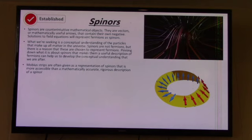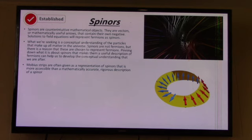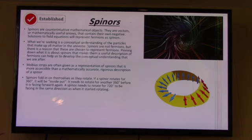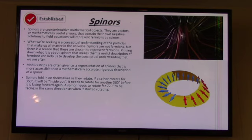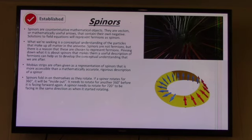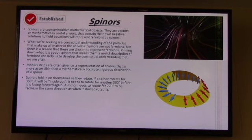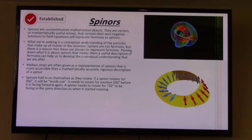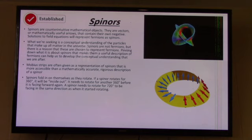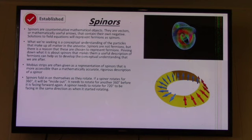This is a little more accessible than a mathematically rigorous description of a spinor. One way to think about it is that spinors kind of fold on themselves as they rotate. So if a spinor rotates 360 degrees, you can think of it as being inside out. It needs to rotate another 360 degrees before it's facing forwards and right side out again. The gist of it is that a spinor needs to rotate 720 degrees to be facing the same direction as when it started rotating.